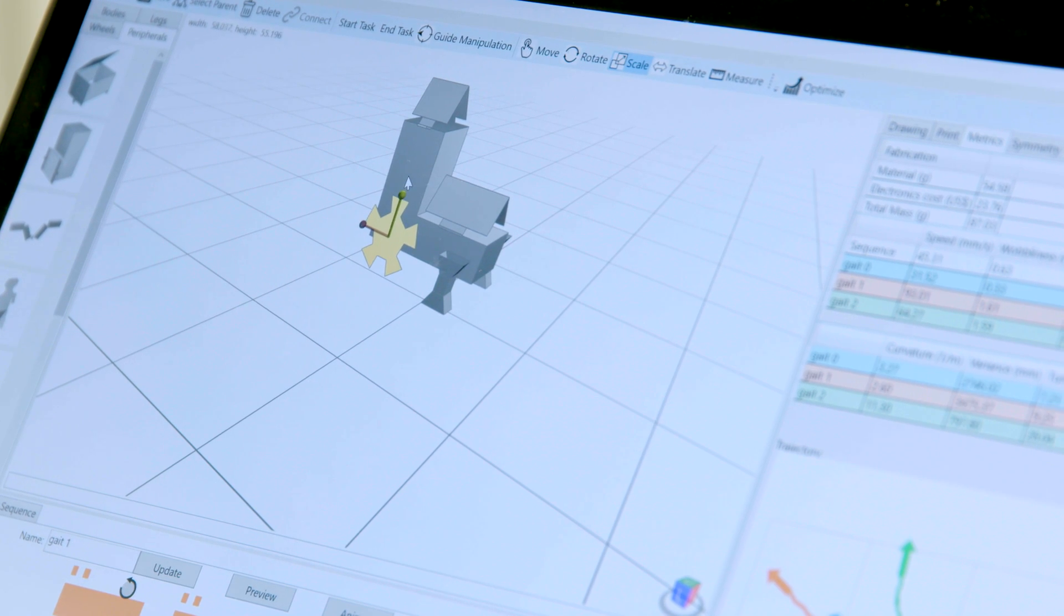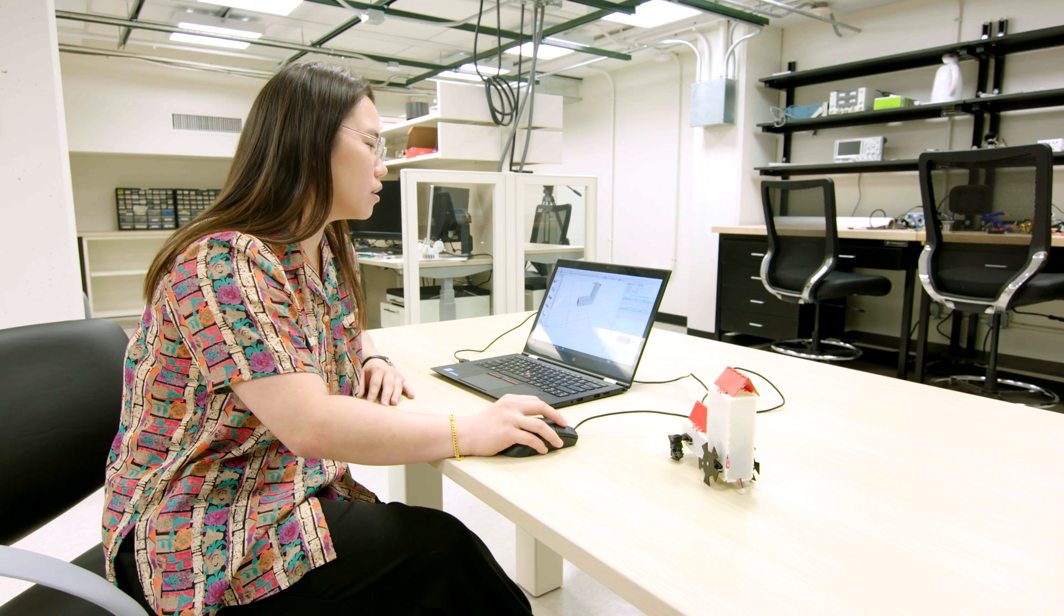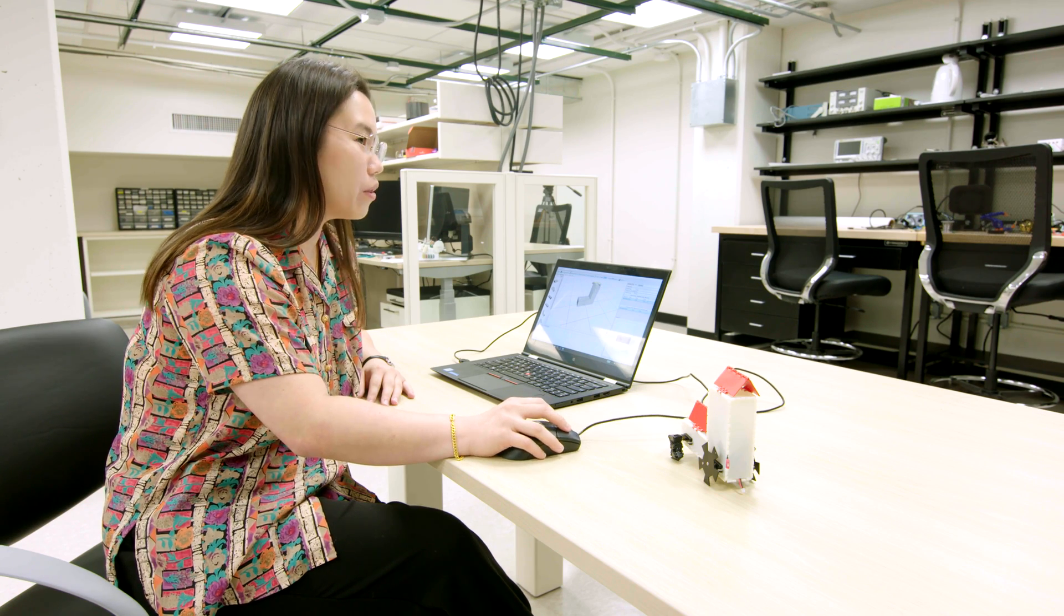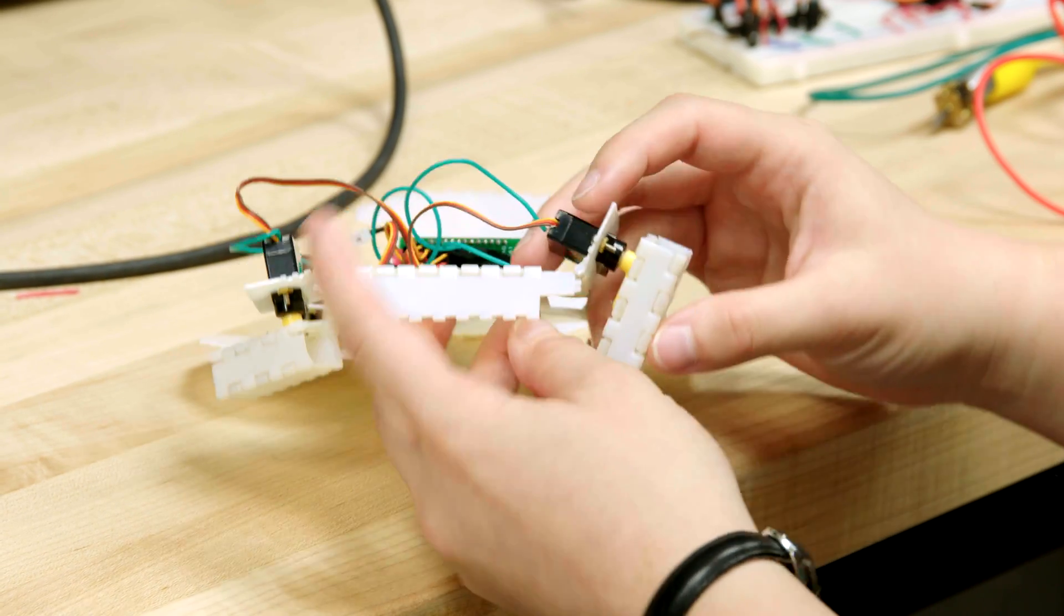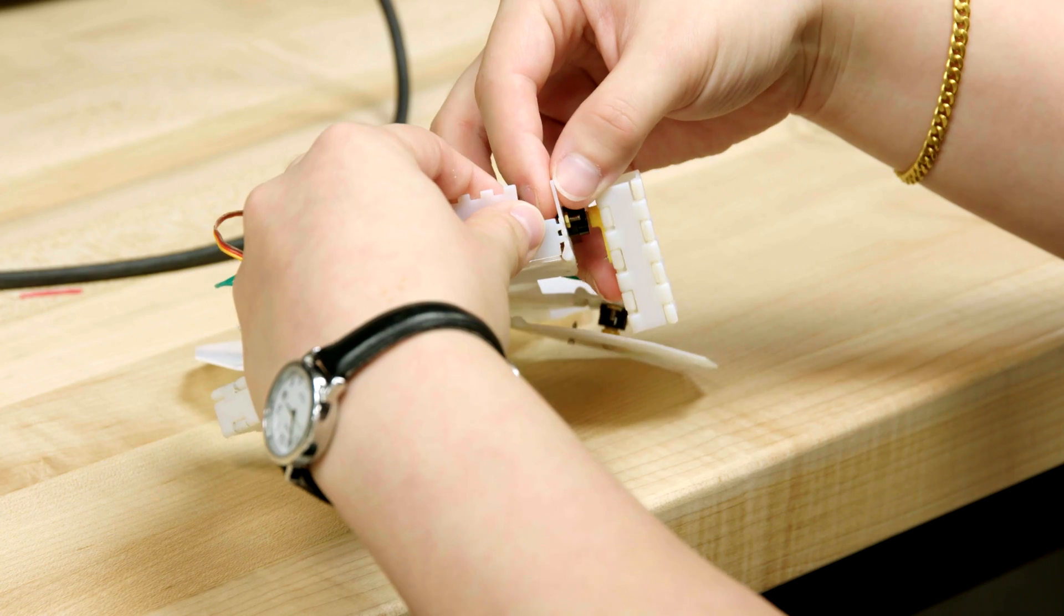They can scale these parts so the geometry is customized to what they want their robot to look like. Origami robots are robots that you fabricate as 2D sheets and then fold into their 3D form. The idea is that we want to make the fabrication process much faster.